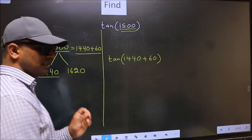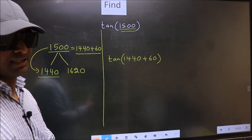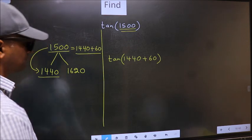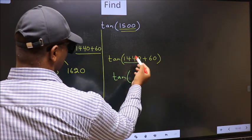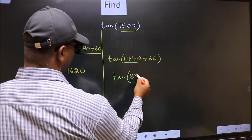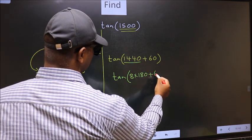This is your step one. Next, tan - in place of this now we should write 8 into 180 plus 60.